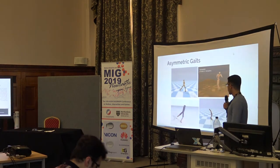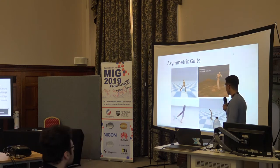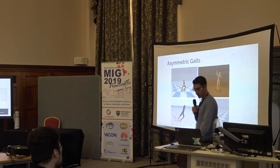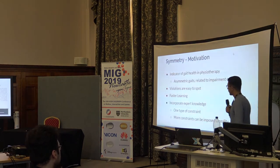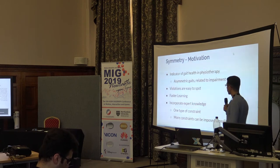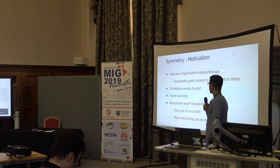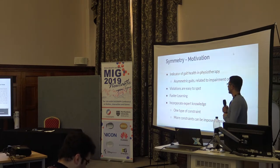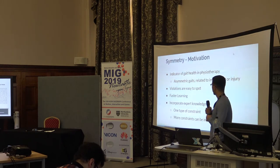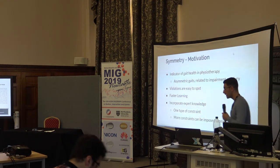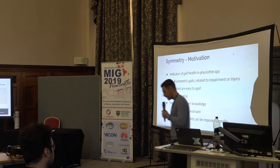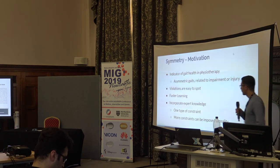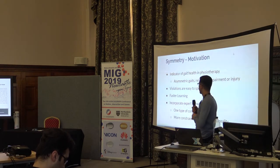So what we want to do is get rid of motions like these, which are asymmetric gaits. If you want to enforce symmetry — it's because symmetry is an indicator of gait quality in physiotherapy, and it's because asymmetric gaits are related to impairments or injury. For example, if you see me walking like this, you might think that I have a problem in my right leg.